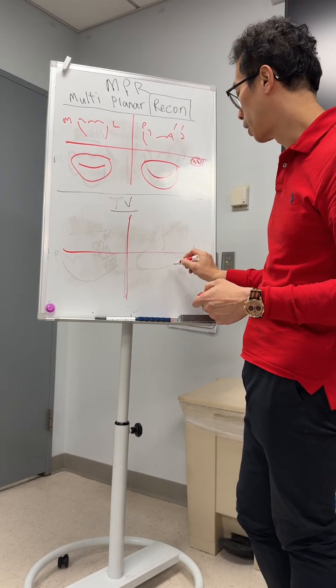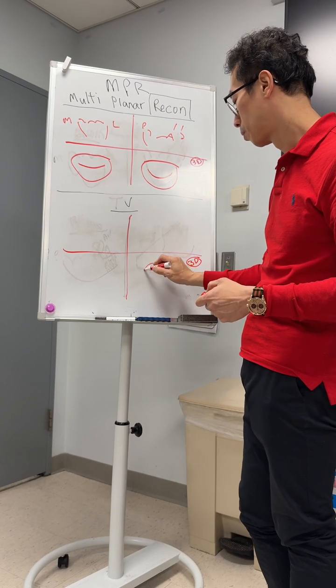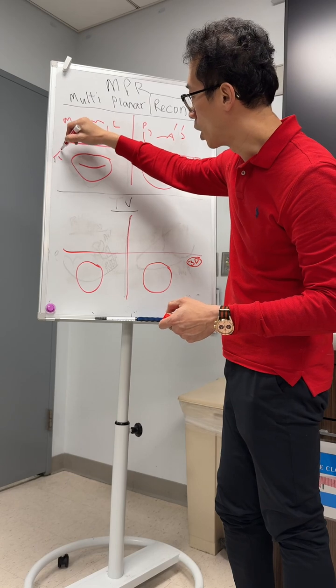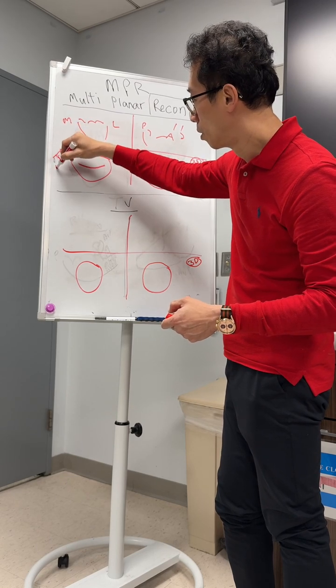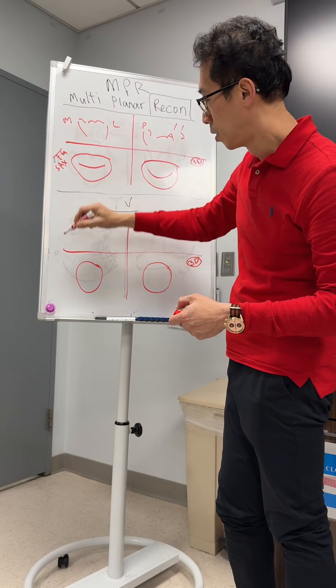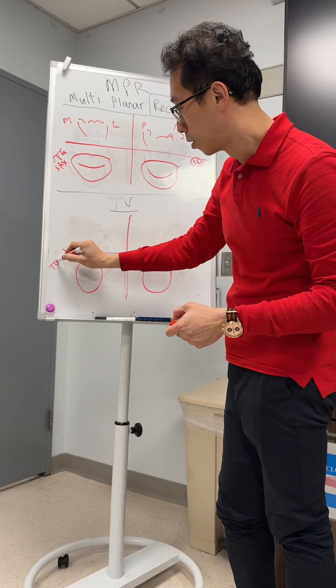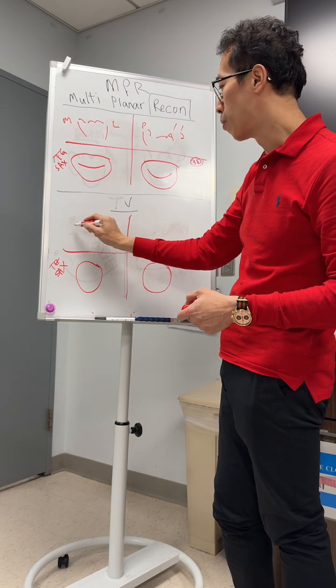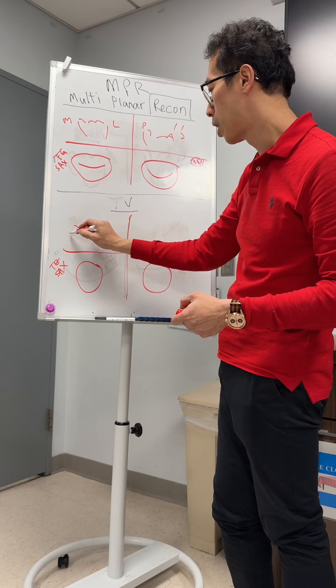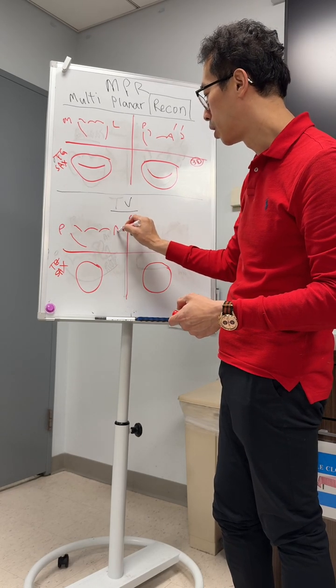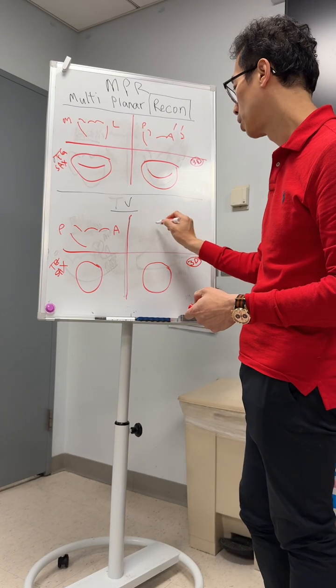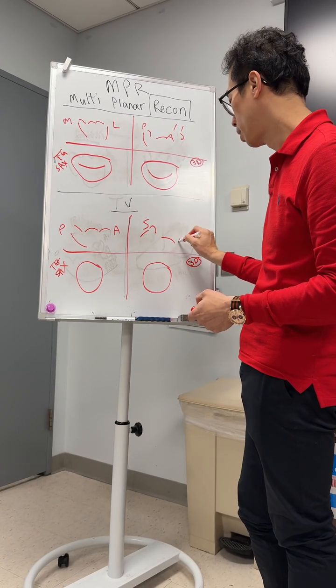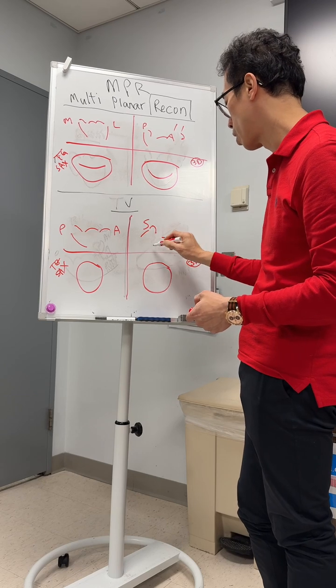So now with the tricuspid, it's a bit similar. So this will be more equivalent of a transgastric short axis, this is transgastric short axis. This is a magnified inflow view, atrial inflow view. So this is posterior, this is anterior.